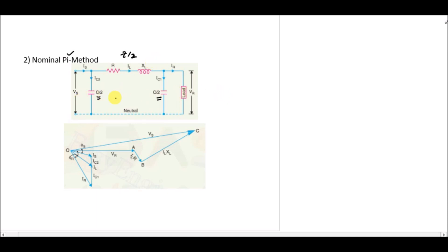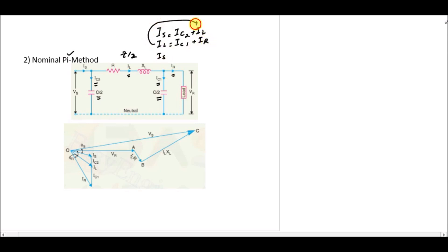Now if we have to write the formulas for the nominal pi method, firstly IS is equal to IC2 plus IL, and this IL is equal to IC1 plus IR. So IS is equal to IC1 plus IC2 plus IR. This is your sending end current equation that you can use in numerical formulations.